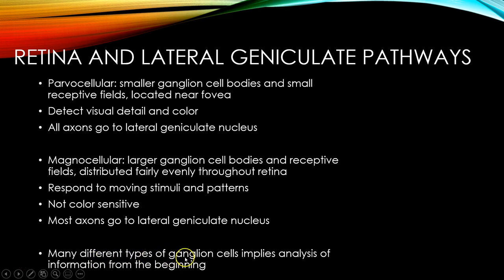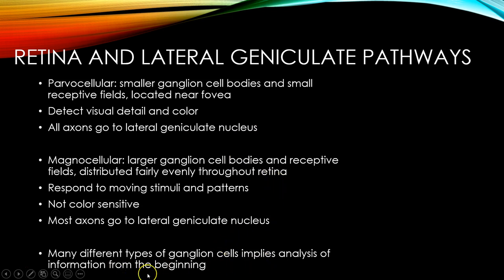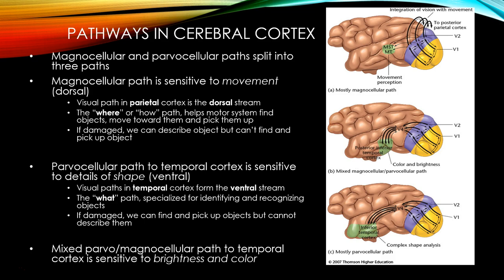Because there are many different types of ganglion cells going through these different pathways, this implies the analysis of visual information from the very beginning of the visual processing pathway.